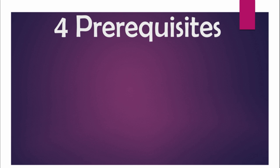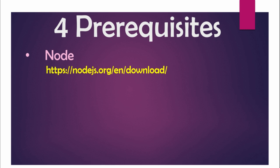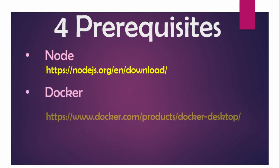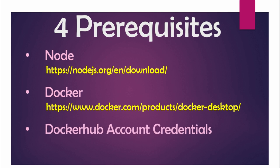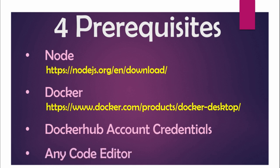First, we have four pre-requests for the same. The first one is you should have Node installed in your machine — here is a link from where you can download and install it. Second, you should have Docker installed on the machine. Third, you should have Docker Hub account credentials; if you don't have one, you can create it from Docker Hub. And the last one is you should have any code editor.